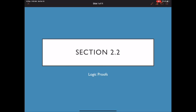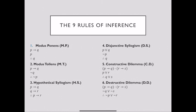Section 2.2 is all about logic proofs. We aren't going to be using truth tables anymore. In the last section we proved modus ponens and modus tollens. Those are two rules of inference, but there are actually nine.